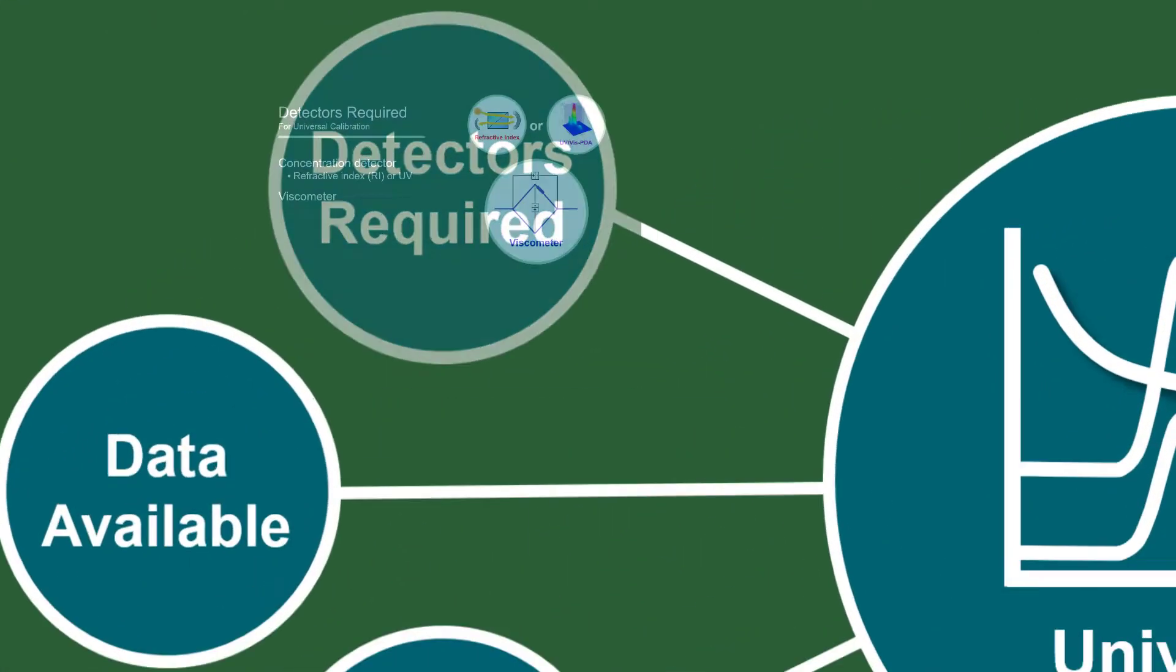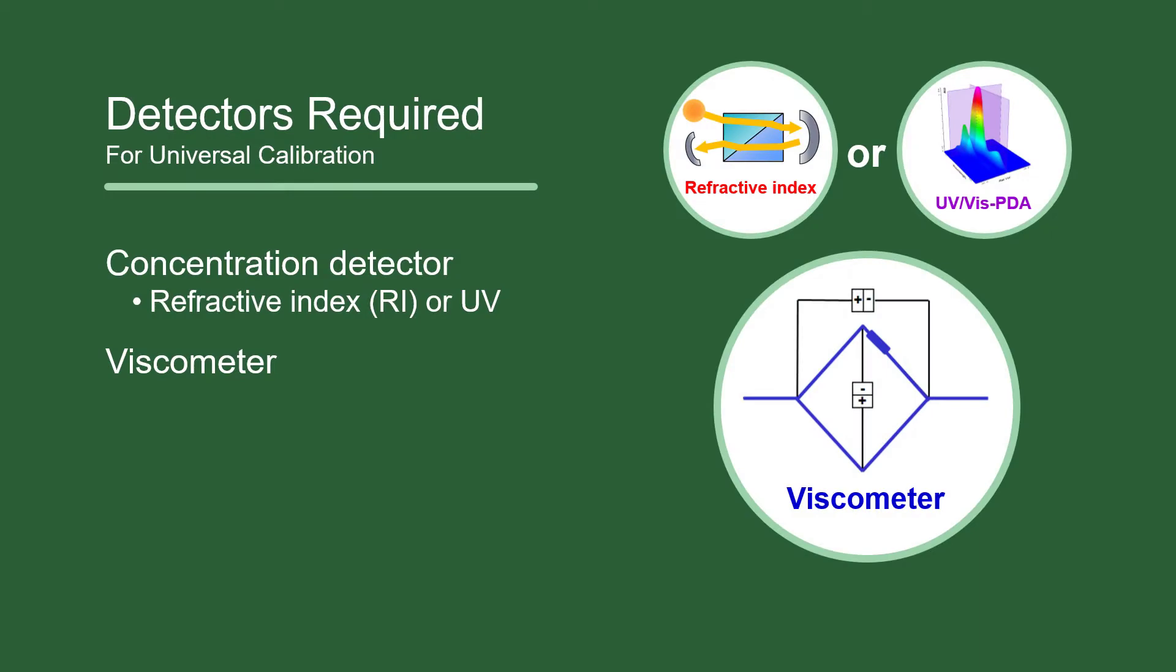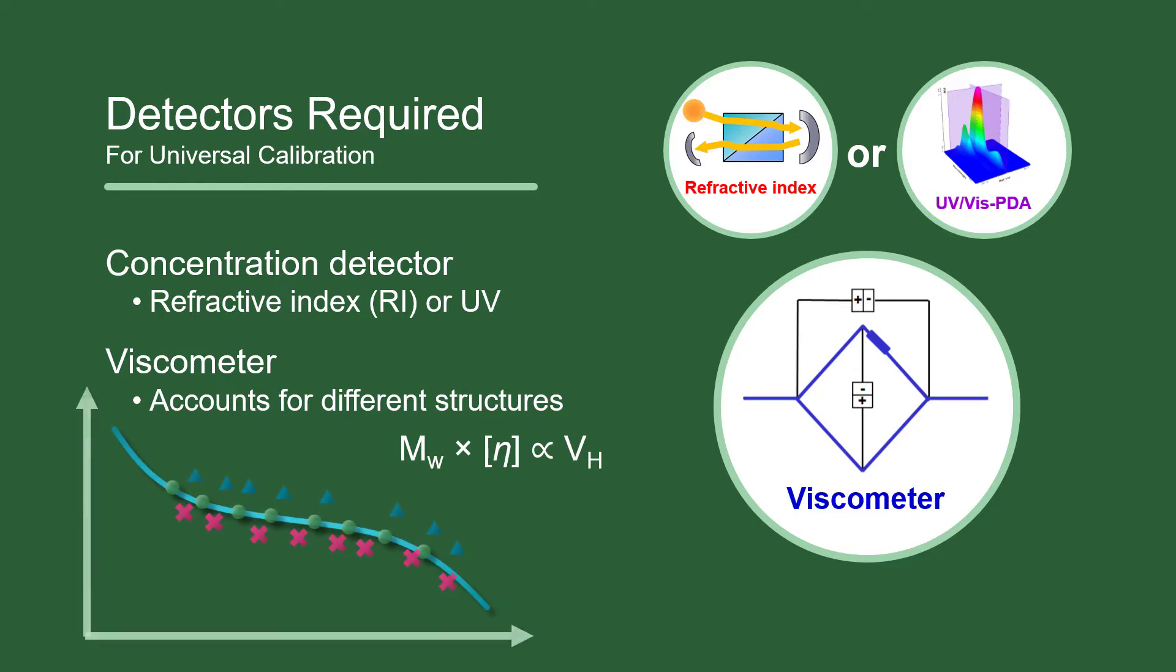A combination of a concentration detector and a viscometer detector is required for universal calibration. The presence of a viscometer detector accounts for differences in molecular structure and allows standards of different types to follow along a single universal calibration curve.